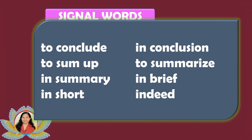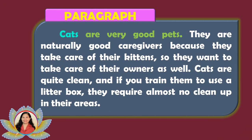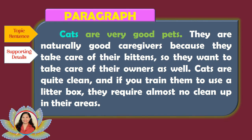Here are a few signal words used by writers in writing conclusions: to conclude, to sum up, in summary, in short, in conclusion, to summarize, in brief, indeed. In this sample paragraph, there is no concluding statement — we only have the topic sentence and supporting details — because not all paragraphs are written in one structure.